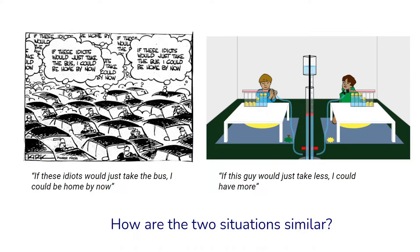We can see that in the situation with the traffic jam, everybody thinks for themselves: if these other idiots would just take the bus, I could be home by now. Similarly, in the cooperation experiment with the children, each one of them might be thinking for themselves: if this other guy would just take less, I could have more.